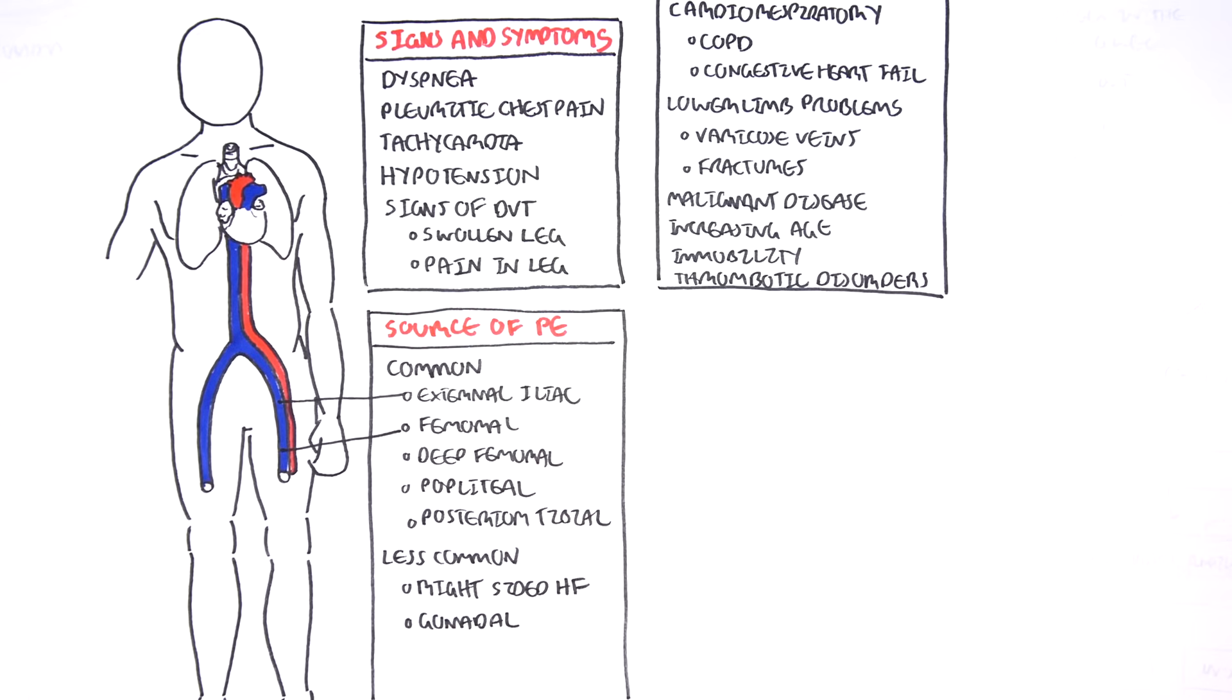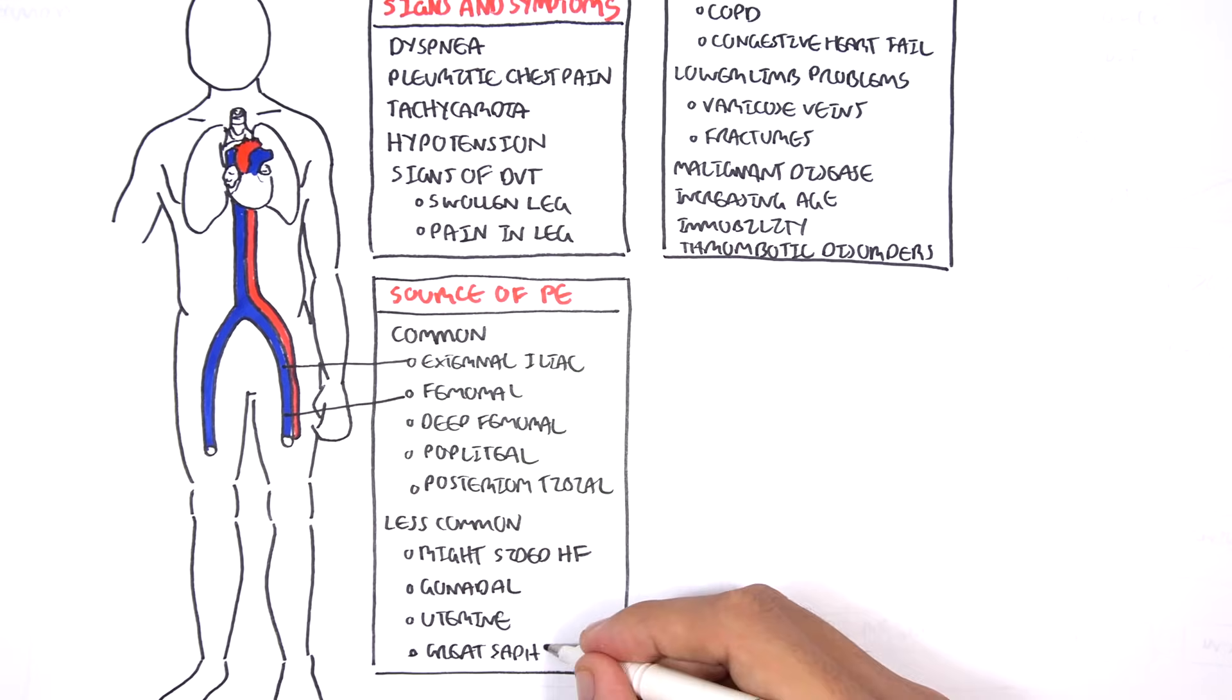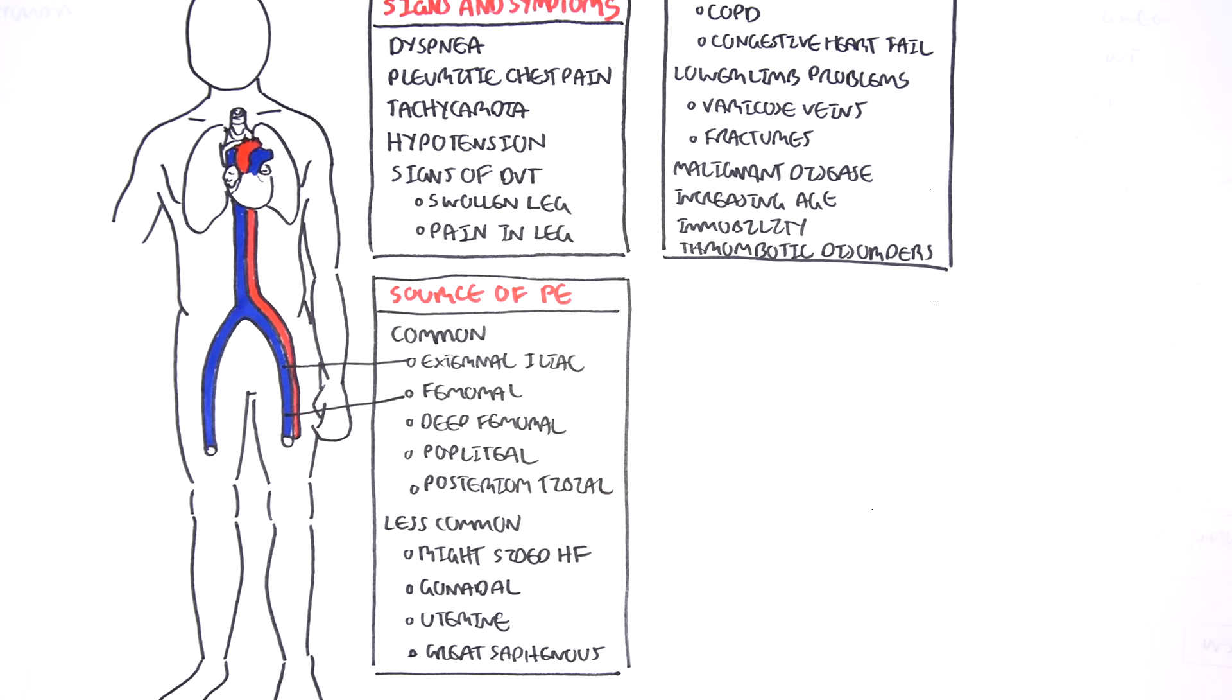...from your right side of the heart, gonadal veins, uterine veins, and your great saphenous. So these are sources where thrombi can occur and then break off, lodging into your pulmonary arteries causing pulmonary embolism.